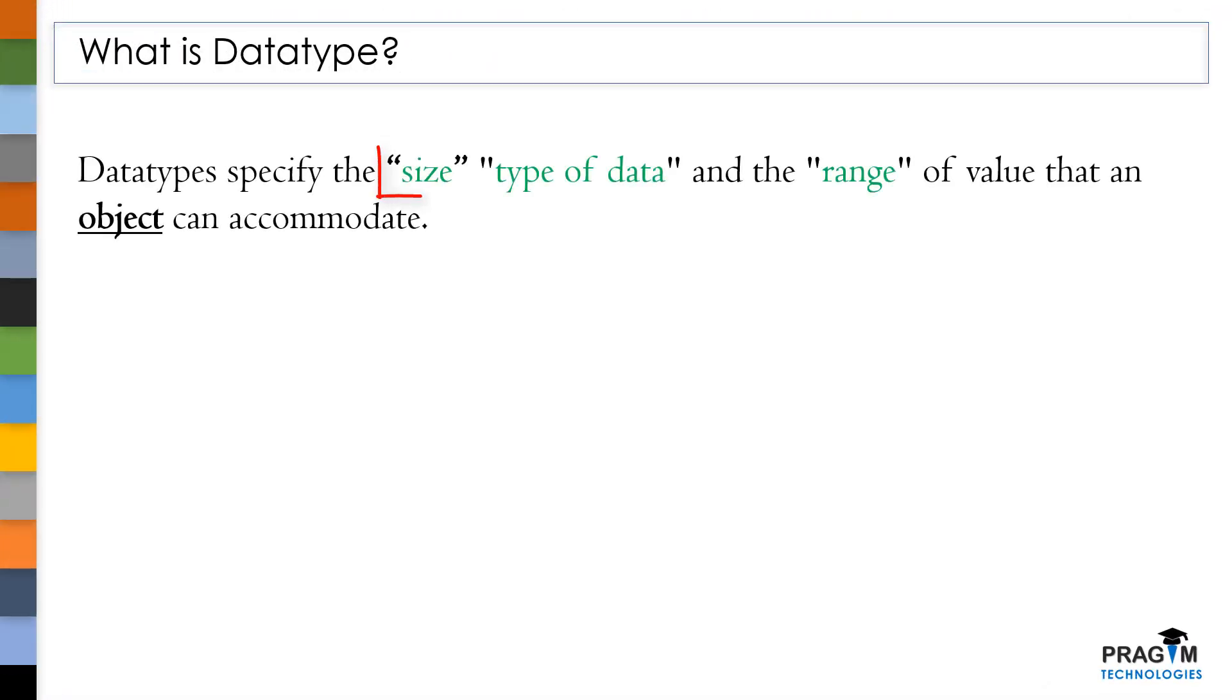Data types specify the size, type of data, and the range of value that an object can accommodate. Here, I have used a new term called object. So what does it mean? As per C standards, object is nothing but a named region of storage. It can be a variable or a structure or an array or a union.